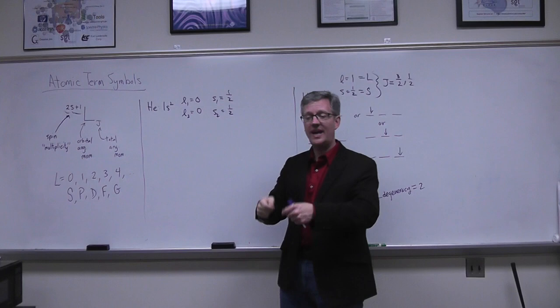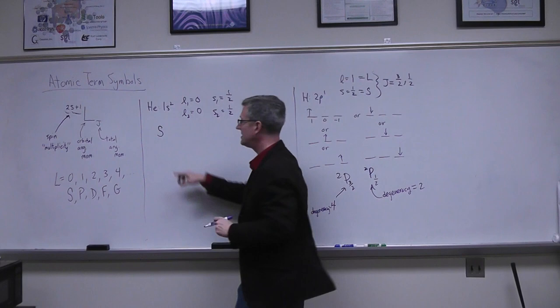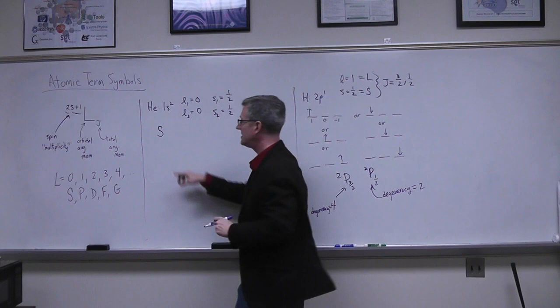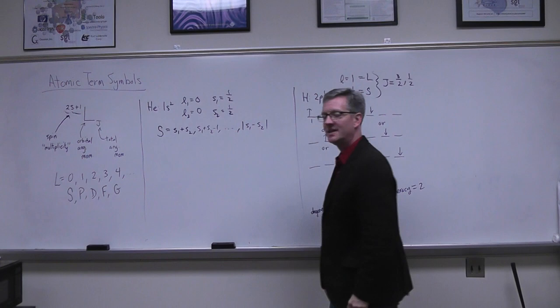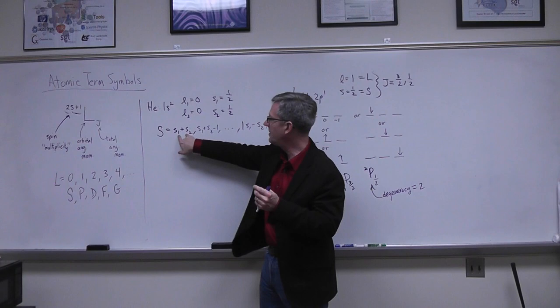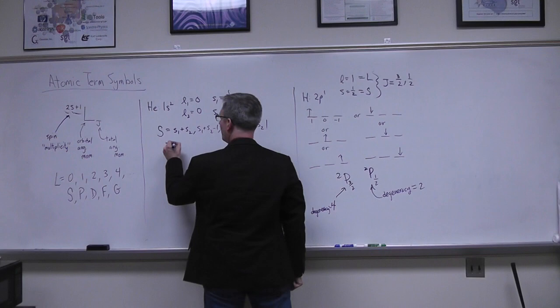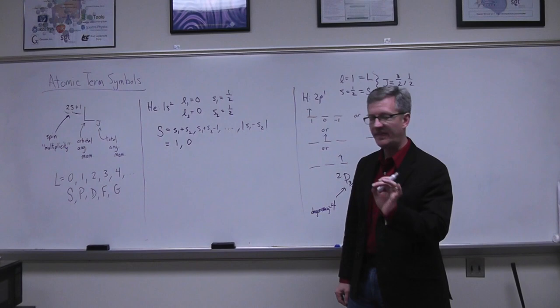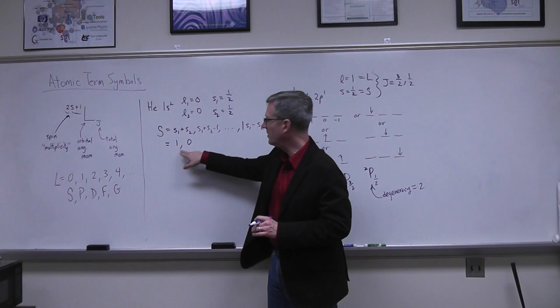Spin is an angular momentum, so the two spin angular momentum vectors can couple constructively or destructively. To get the total capital S for our two-electron system, the allowed values range from s₁+s₂ = 1 (maximum) down to |s₁−s₂| = 0 (minimum), giving S = 1 or S = 0. For orbital angular momentum, both l₁ and l₂ are zero, so capital L can only be zero.